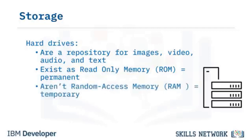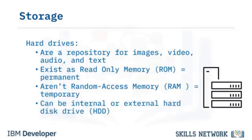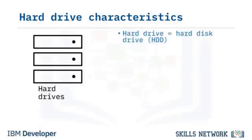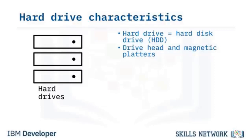ROM, or read-only memory, is non-volatile, meaning it retains data even without power, and is used to boot a computer and for permanent storage. RAM, or random access memory, is the opposite — it is volatile, or temporary storage. The hard disk drive, or HDD, is one type of internal storage device, though external hard drives also exist. Hard drive and HDD are used interchangeably.